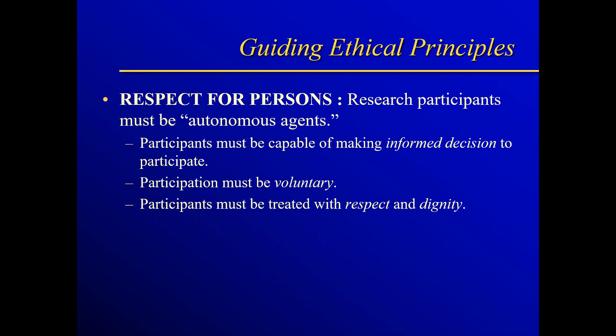First, we need to have respect for our participants. We need to respect people not only because they are human beings, but they are also research participants, and research participants are really the backbone of all social sciences — we need people to get data. In order to treat them with respect, participants must be what's called an autonomous agent: someone who is capable of making an informed decision to participate. Think about it — if we don't tell our participants what the study is going to be about, how can they make an informed decision? So we have to do something called informed consent, but we'll get into that a little bit later.